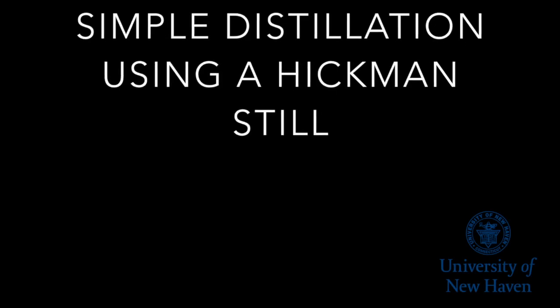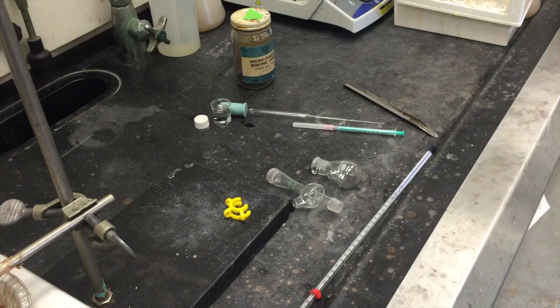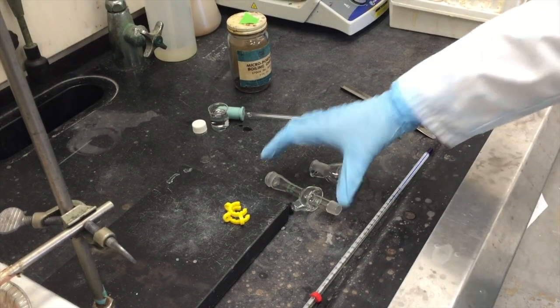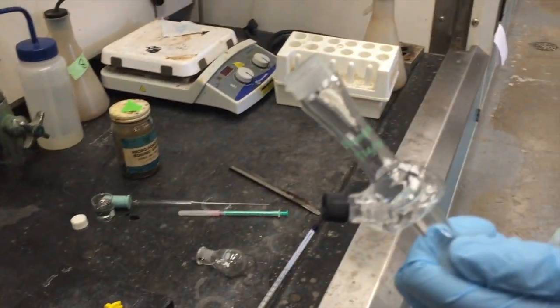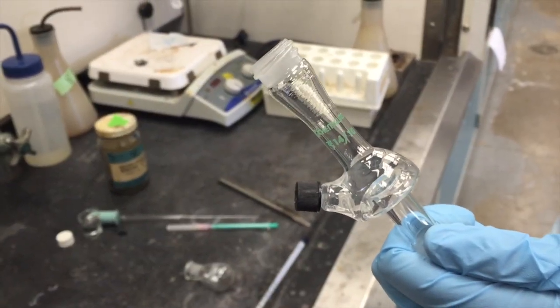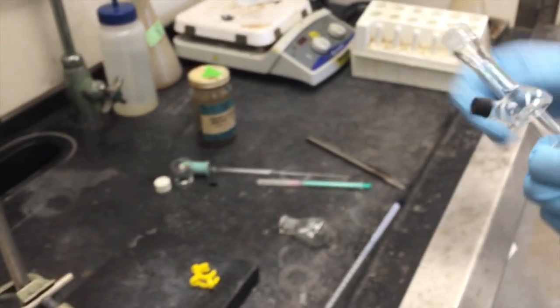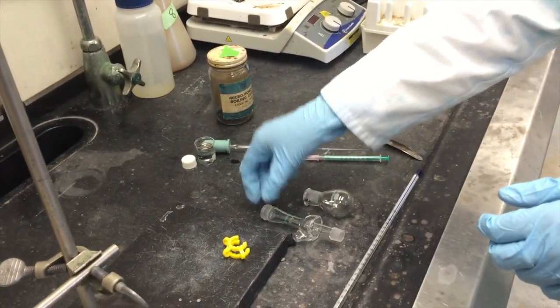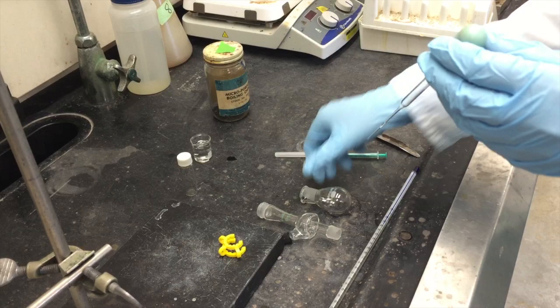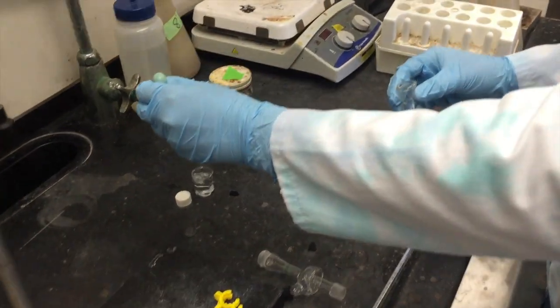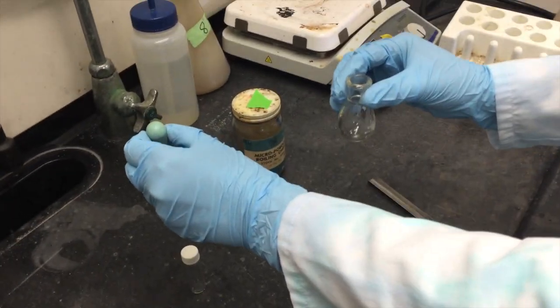In this video you will learn how to perform a simple distillation using a Hickman still. A Hickman still is this piece of apparatus. Begin by transferring your desired amount of liquid to a round bottom flask and adding a boiling chip.